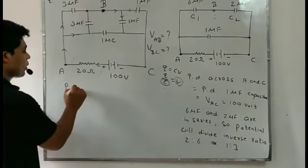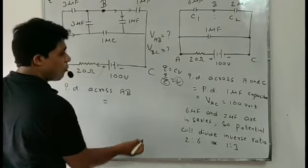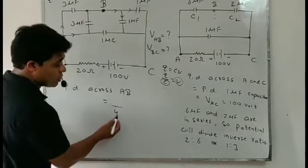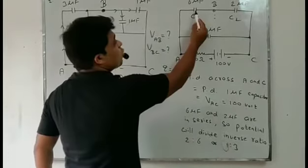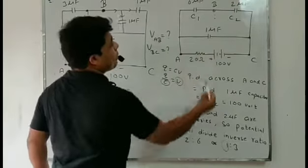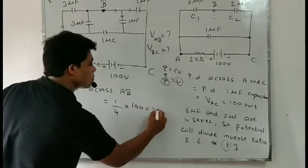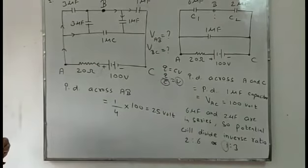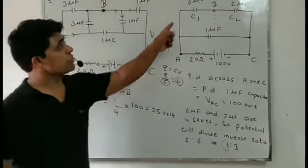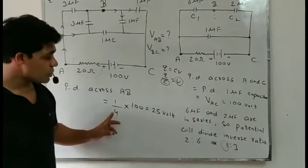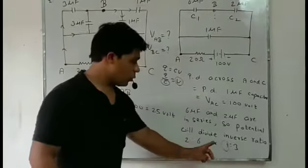Potential difference across AB: the ratio is 1, the sum of the total ratio is 1 plus 3 = 4, and the total potential is 100 volts. So VAB = (1/4) × 100 = 25 volts. That is the potential difference across AB, across the 6 microfarad capacitor. The total ratio sum is 1 plus 3 = 4, and the total potential is 100, so 100 divides between 6 microfarad and 2 microfarad in the ratio 1 to 3.